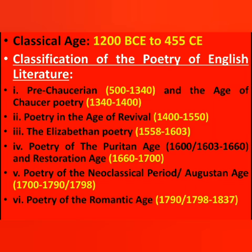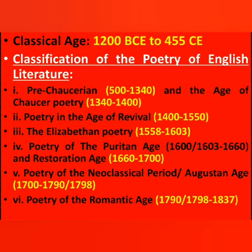After the Age of Revival we have Elizabethan poetry, spanning 1558 to 1603. After that comes poetry of the Puritan age and then the Restoration age. Then we have the poetry of the Neoclassical or Augustan age, spanning 1700 to 1798. Lastly, we have poetry of the Romantic age, spanning 1790 or 1798 to 1837.